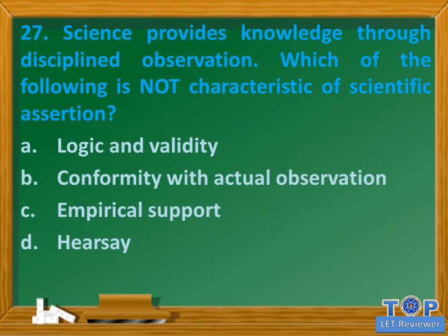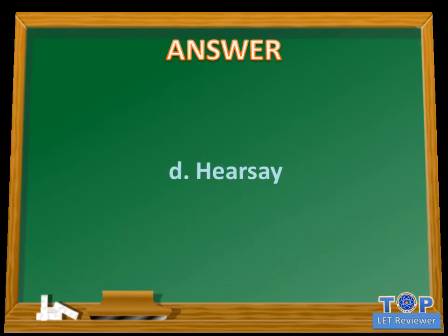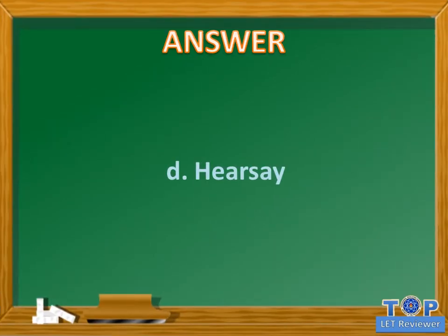Question number 27. Science provides knowledge through disciplined observation. Which of the following is not characteristic of scientific assertion? A. Logic and validity. B. Conformity with actual observation. C. Empirical support. D. Hearsay. Answer: D. Hearsay.